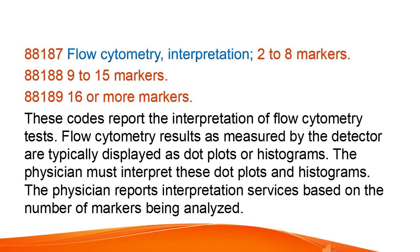Flow cytometry, interpretation, 2-8 markers, 9-15 markers, 16 or more markers. These codes report the interpretation of flow cytometry tests. Flow cytometry results as measured by the detector are typically displayed as dot plots or histograms. The physician must interpret these dot plots and histograms. The physician reports interpretation services based on the number of markers being analyzed.